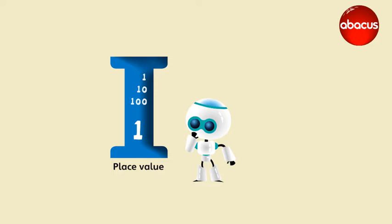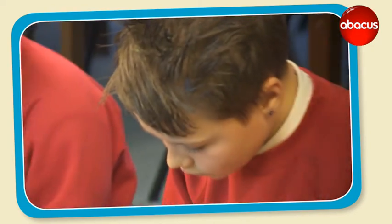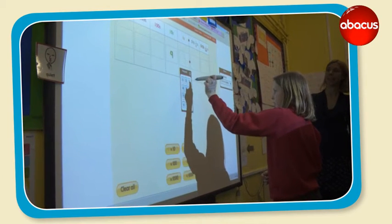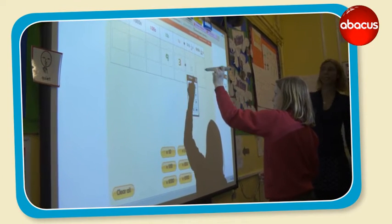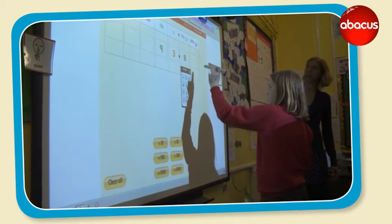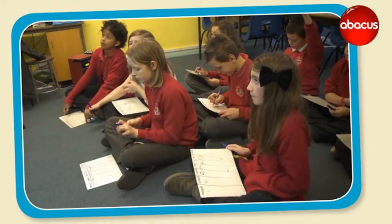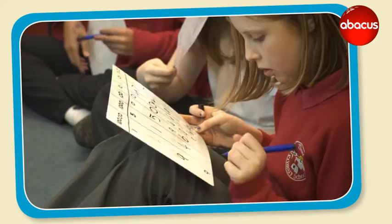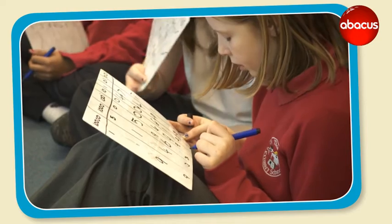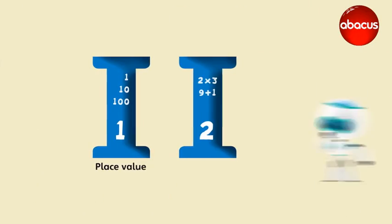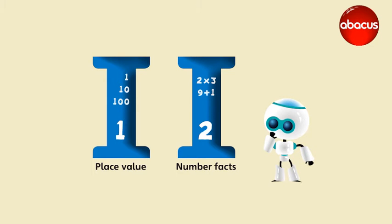The first pillar really relates to place value. A child who is confident has a robust understanding of how our number system works — the relationship between numbers, how numbers have to be written, what happens when you multiply or divide by 10, what happens when you add or subtract 10, 100, or 1000. They understand how the powers of 10 work and how the wonderful number system we've inherited from the Hindus and the Arabs works.